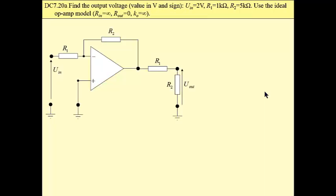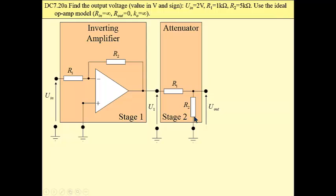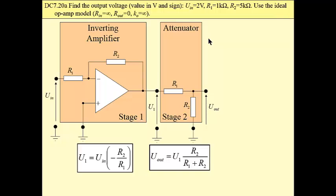Now another configuration. Amplifier circuit and attenuator at the second stage. This amplifier circuit at the left, stage 1, is inverting amplifier circuit and attenuator voltage divider at the right.